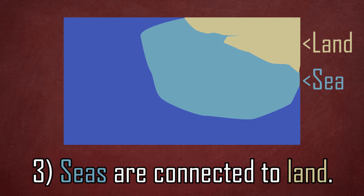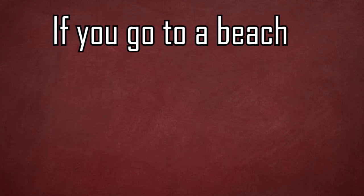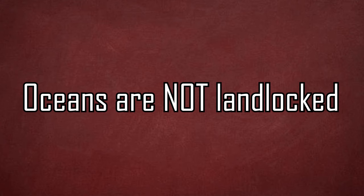This illustration shows the difference more clearly. The sea connects the land with the ocean. So if you go to a beach, you'd be swimming in the sea. A trick that can make you remember this difference is that if you're in the middle of the sea, you can see the land. But if you're in the middle of the ocean, you can't see the land, because oceans are not landlocked.